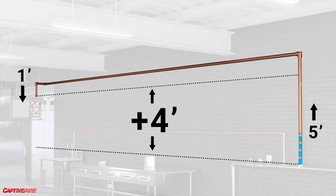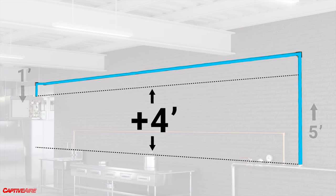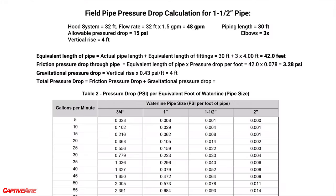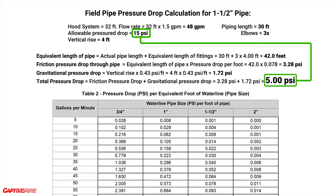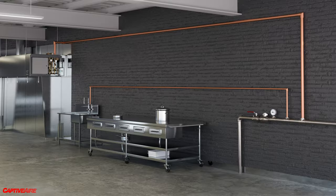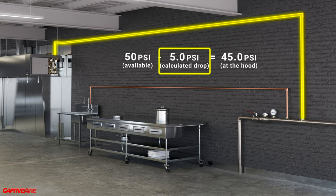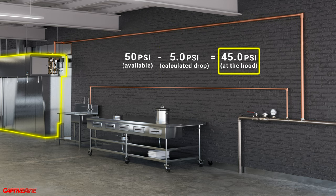When the water first makes its way up the pipe, it overcomes all five feet of height and its associated pressure drop. But once it goes across and comes back down, it regains exactly one foot of water column pressure. Since this system will be full of water all the time, this siphon effect is to our advantage — all we need is the height delta of four feet. The diameter of the pipe doesn't matter here: this is a constant of 0.43 psi per foot, giving us a gravitational pressure drop of 1.72 psi. Adding this to the friction drop gives a total of 5 psi — meaning we should see about 45 psi at the hood, well above the required 35 psi. This works and it works well.